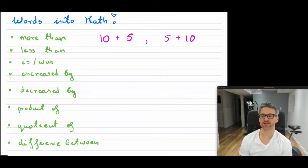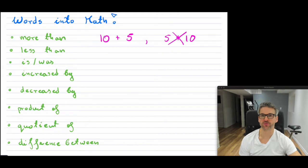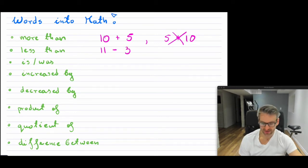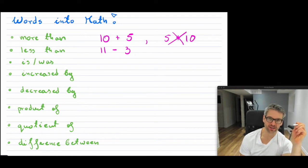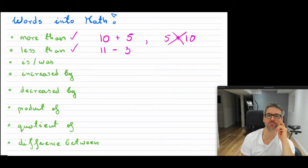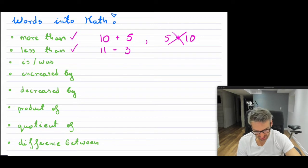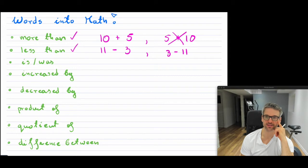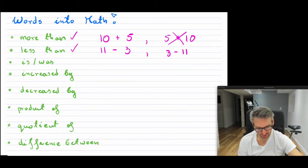The second one is "less than." Just like "more than," so when you say "less than" — for example, "three less than eleven" — you would write this as eleven minus three, because it is three less than eleven. These two are really tricky and give people a headache, so be careful. "Three less than eleven" is often written incorrectly by some students. So be careful when dealing with "less than" and "more than" in word problems.